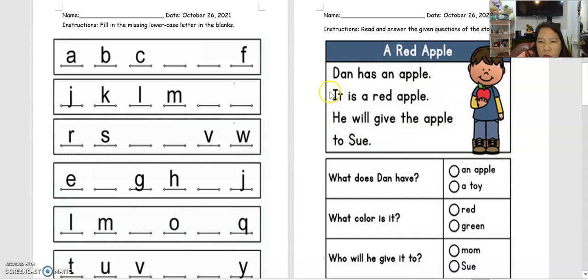You have to read it again so that you can answer the question correctly. What does Dan have? This is the first question. What does Dan have? An apple or a toy? So what is this thing here? What fruit is this? Next, what color is it? Is it red or is it green?